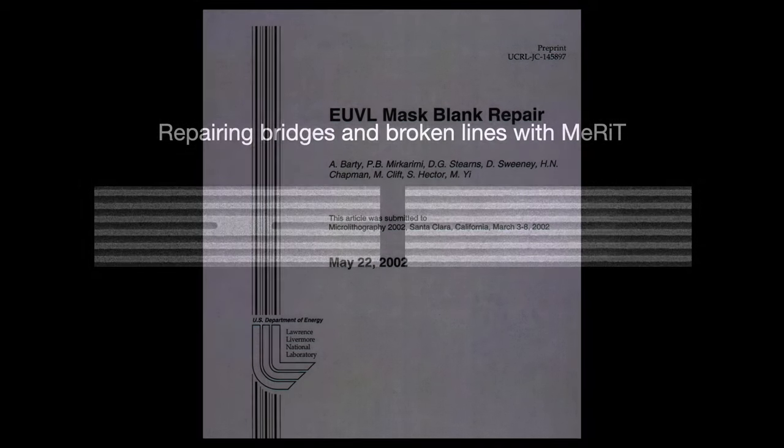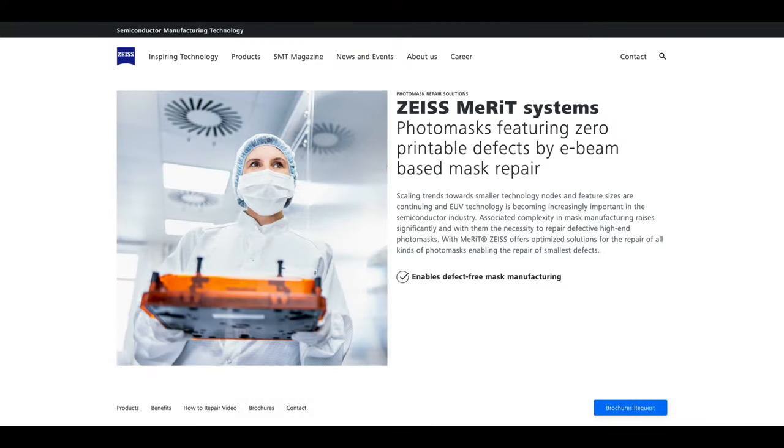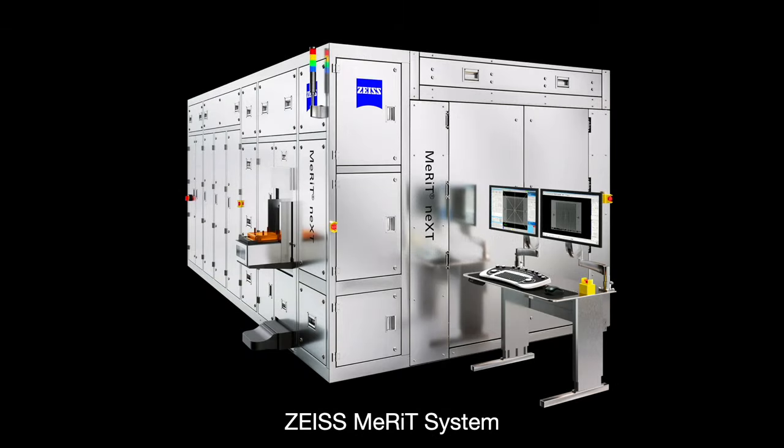With EUV, you have a great deal of smaller defects. So finding a tool that can fix even the smaller ones is essential. Probably the current industry standard tool for doing this is Carl Zeiss's photomask repair tool MERIT, which uses a low voltage electron beam to fix lines.